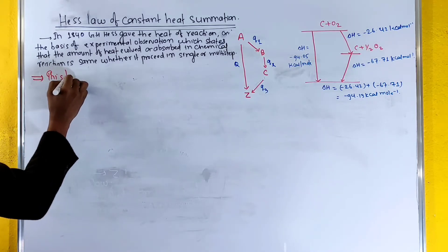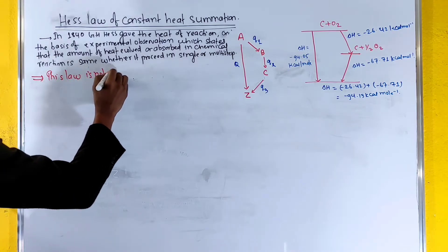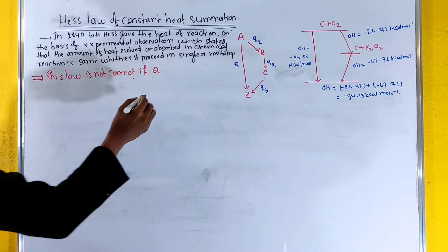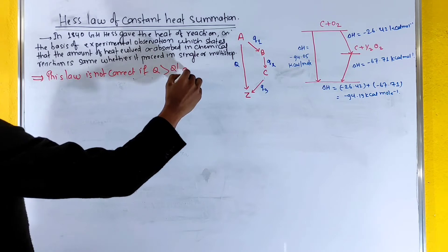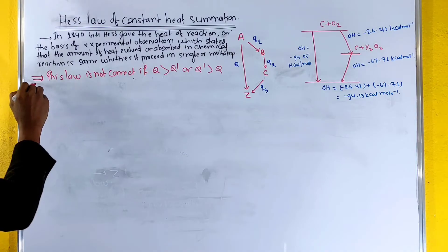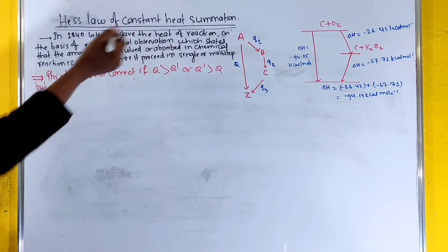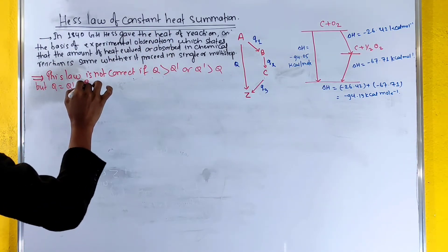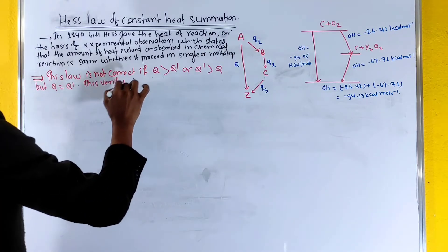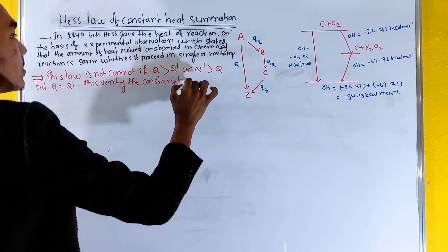This law is not correct if q is greater than q prime or q prime is greater than q. But when q is equal to q prime, this verifies the law of constant heat summation.